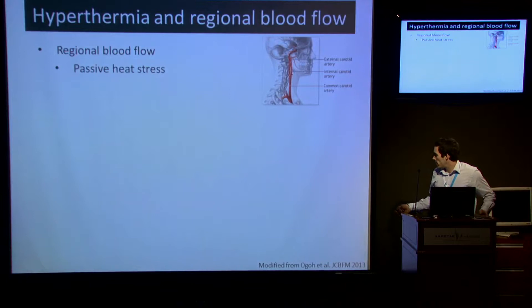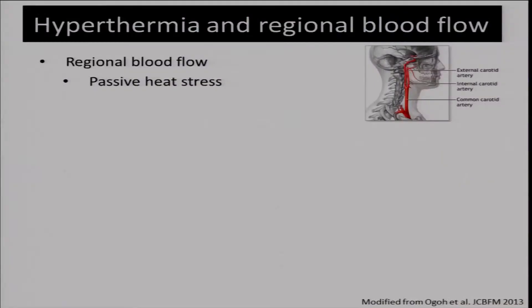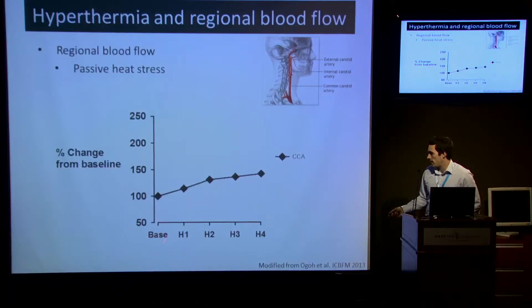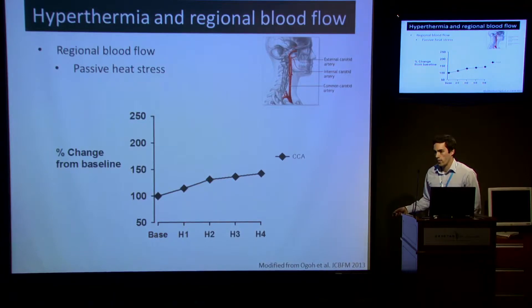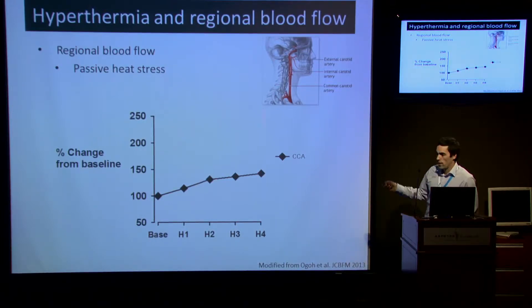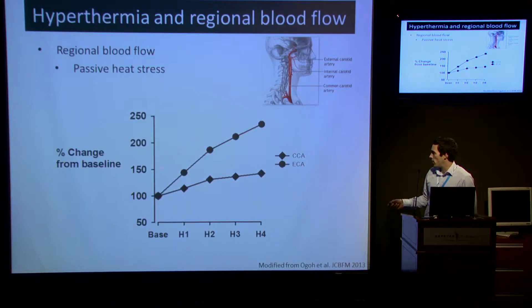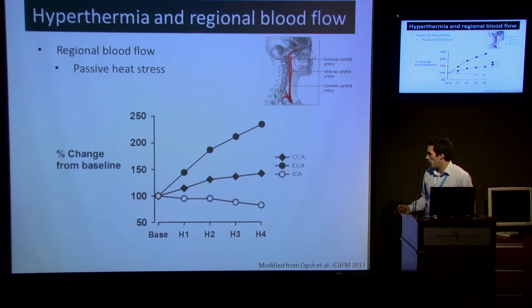In a recent study by Ogoh in 2013 with passive heat stress, we have on the x-axis baseline temperatures with steady increases in temperature with heating in a water-perfused suit, from 37 to 38.3 degrees. And a percentage change in baseline blood flow. In the common carotid artery, the main trunk artery, it steadily increases. In the external carotid artery, we get a very significant increase in blood flow, whereas blood flow to the brain predictably declines with heat stress.